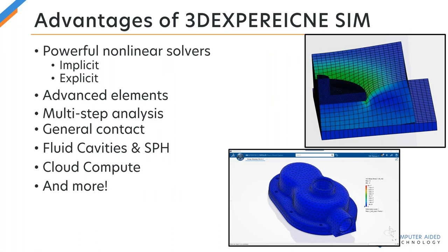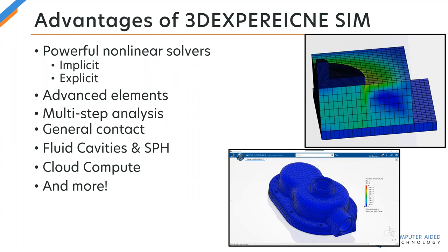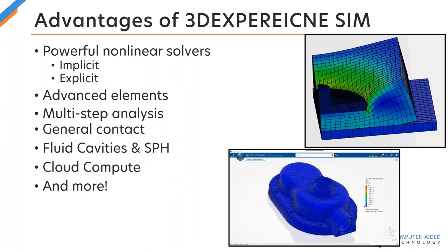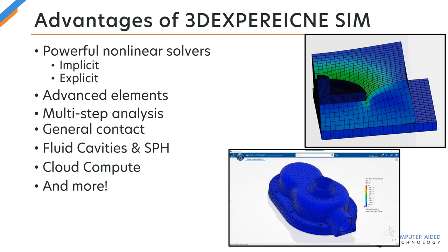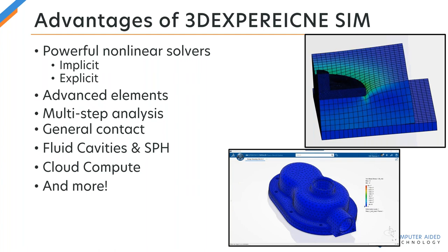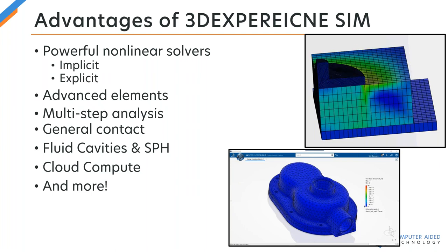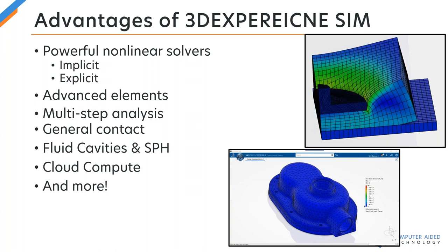Some advantages of 3D Experience simulation: obviously the powerful nonlinear solvers — we can do implicit and explicit analysis. SOLIDWORKS does not really have an explicit solver outside of the drop test study. We can do advanced element types, including hexahedral elements. We can accomplish multi-step analysis. The general contact is probably my favorite feature because it handles that sliding nonlinear contact so well. We can implement fluid cavities directly into the finite element model, cloud computation — the list goes on and on.